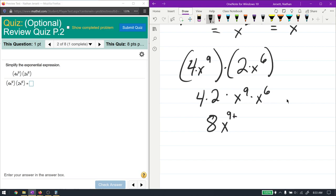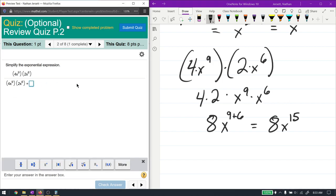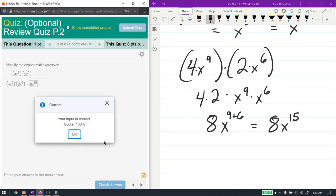Here we have like bases that are multiplying, so we should add the exponents. So we have x to the 9 plus 6, and that's of course x to the 15. 8x to the 15 is our answer. That's correct.